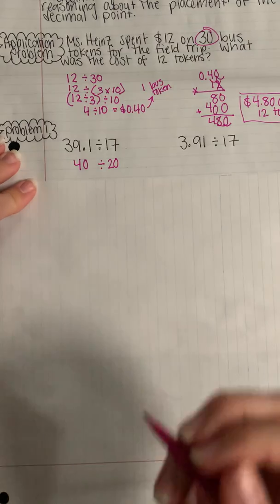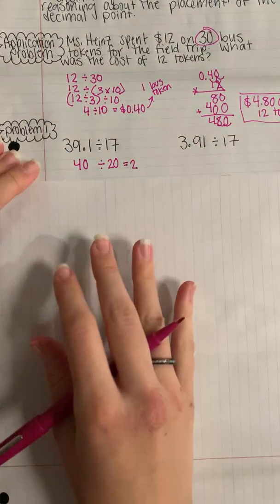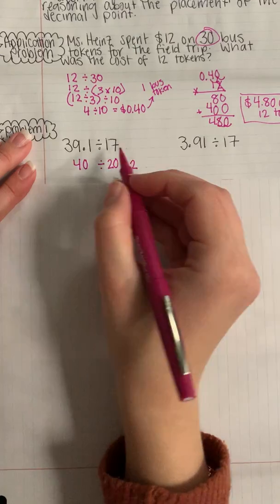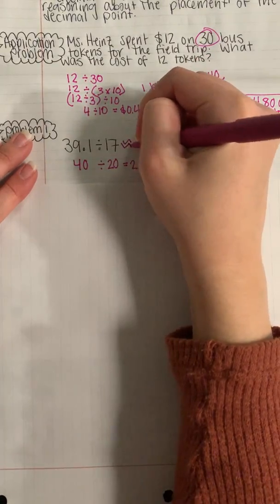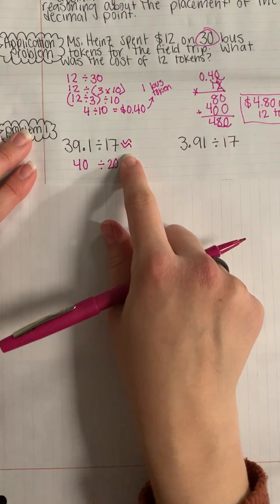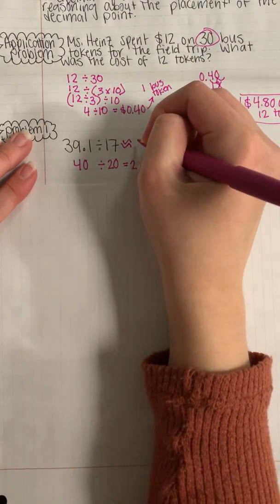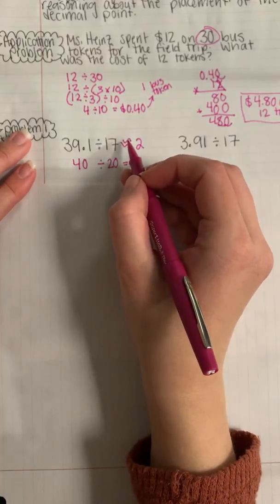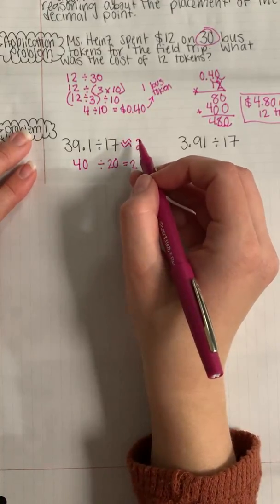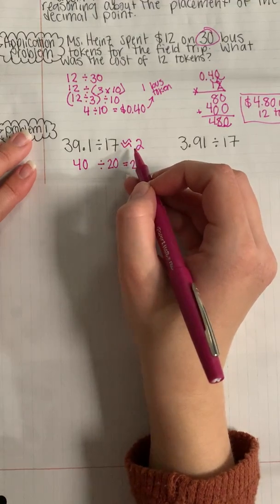So 40 divided by 20 would be like doing 4 divided by 2, and so that would give us 2. And that means we could write our estimate, our estimated quotient would be around 2. And when we mean to write like the estimated quotient is or it's around, we put a squiggly equal sign.